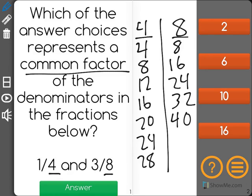Well let's see. 8 is not one of our answer choices. So even though it is a common factor, I don't see 2 on our list. I don't see 6. I don't see 10. But as you can see, both 4 and 8 have a factor of 16, making it a common factor.